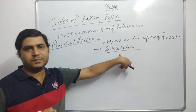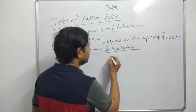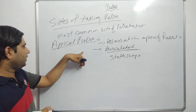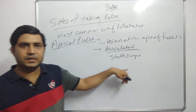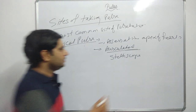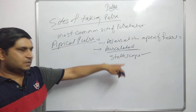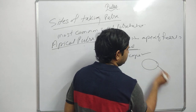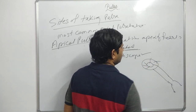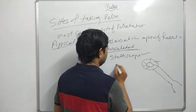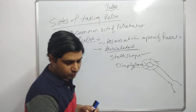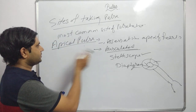For auscultating the apical pulse, we use the stethoscope. The stethoscope has tubings, earbuds, and a drum end with a bell and diaphragm. We use the diaphragm to assess the apical pulse. The level of the apical pulse site is the fifth intercostal space - that is where we check the apical pulse.